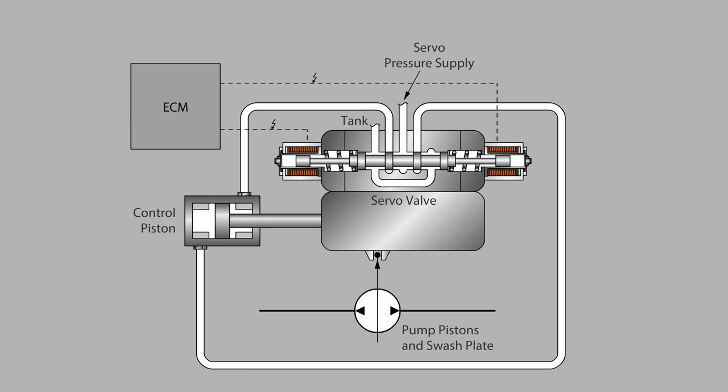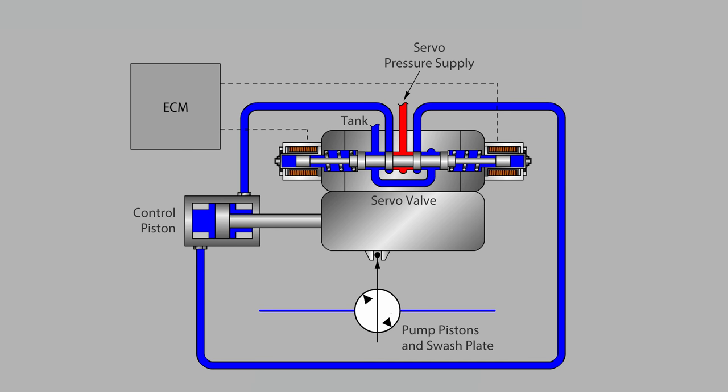In this video, we will look at a simple model for controlling the direction of flow and the flow rate from a variable displacement piston pump. In this case, it is a pump that is typically used in a closed-loop hydraulic system.